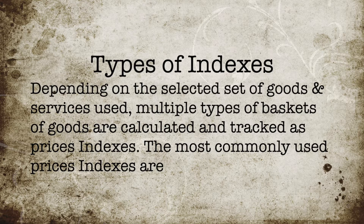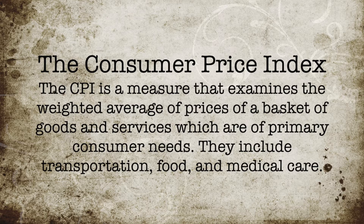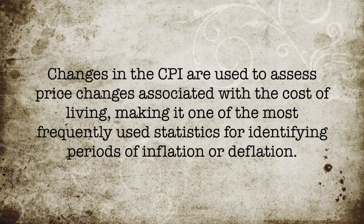Depending on the selected set of goods and services used, multiple types of baskets of goods are calculated and tracked as price indexes. The most commonly used price indexes are the Consumer Price Index (CPI) and the Wholesale Price Index (WPI). The CPI measures the weighted average of prices of a basket of goods and services of primary consumer needs, including transportation, food, and medical care. CPI is calculated by taking price changes for each item in the predetermined basket and averaging them based on their relative weight. Changes in the CPI are used to assess price changes associated with the cost of living, making it one of the most frequently used statistics for identifying periods of inflation or deflation.